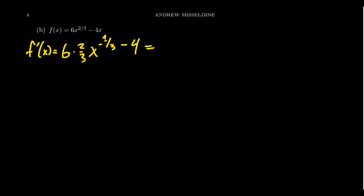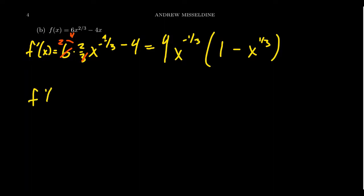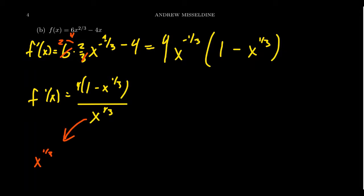Let's write the derivative as a fraction. Note that 6 · (2/3) = 4, and factoring out 4 and x^(-1/3) gives us 4(1 - x^(1/3)) / x^(1/3). The denominator goes to zero when x^(1/3) = 0, so x = 0. This is a critical number corresponding to a vertical tangent line. The numerator goes to zero when 1 - x^(1/3) = 0, so x^(1/3) = 1, and cubing both sides gives x = 1. This corresponds to a horizontal tangent line. So our two critical numbers are x = 0 and x = 1.